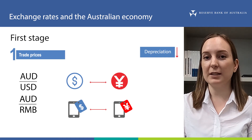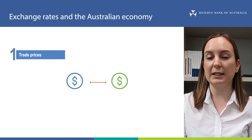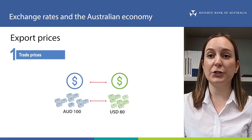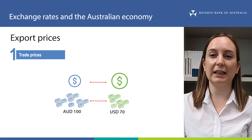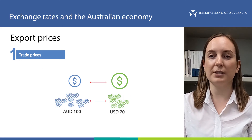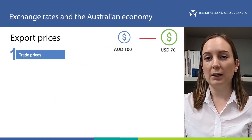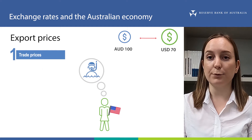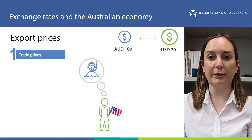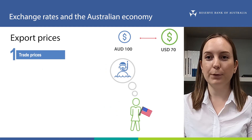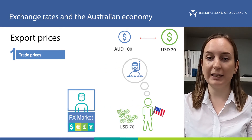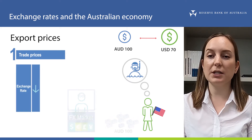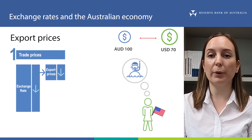Keep in mind that an appreciation in the Australian dollar would have the exact opposite effect. When the Australian dollar depreciates, foreigners need less of their home currency to purchase a given amount of Australian dollars. As a result, goods and services priced in Australian dollars that we sell to foreigners — exports — become cheaper for them. For example, foreign tourists visiting Australia will need less of their home currency to pay for their holiday here, so a depreciation in the Australian dollar leads to lower export prices.